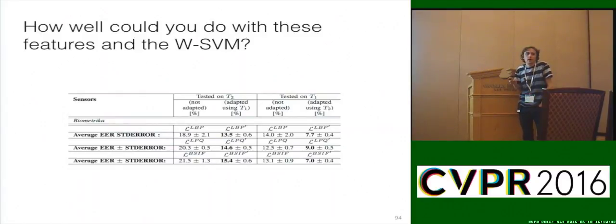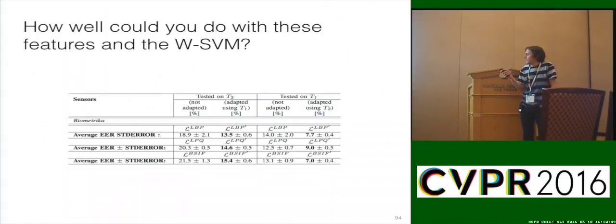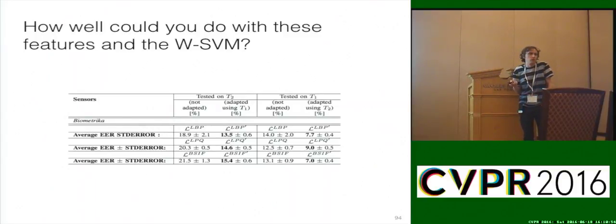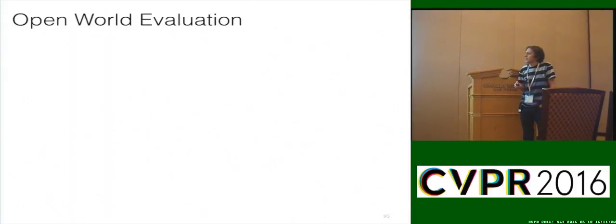If you imagine you had a perfect classifier telling you this is novel or this is known, and then you kept doing that adaptation, the error rates could go down pretty far. The only limiting factor at this point is really the feature representation. The WSVM is probably a good enough algorithm to be usable in that case.